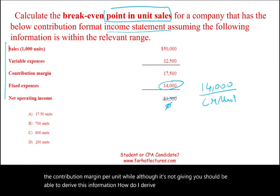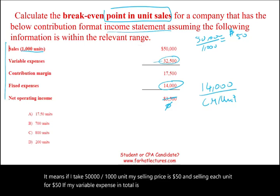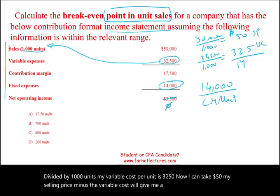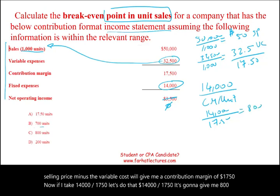If we sold 1,000 units for $50,000, the selling price is $50,000 divided by 1,000 = $50 per unit. Variable expenses of $32,500 for 1,000 units gives $32.50 per unit. So contribution margin per unit is $50 minus $32.50 = $17.50. Now: $14,000 divided by $17.50 equals 800 units — that's our break-even point.